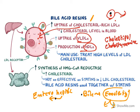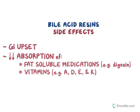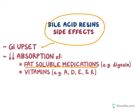Whenever the liver needs more cholesterol, LDL and VLDL are reduced from the blood and HDL levels are increased. However, these drugs are not as effective as statins, so bile acid resins are often used together with statins. Side effects include GI upset, and because the resins combine with lipid molecules, fat-soluble medication absorption is reduced and fat-soluble vitamin absorption is also reduced.